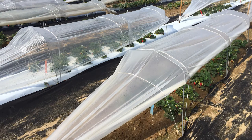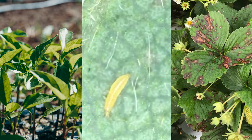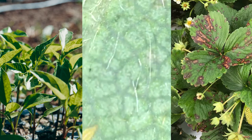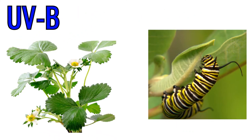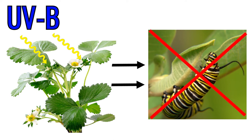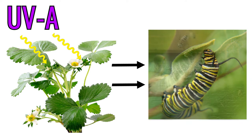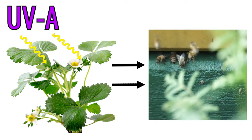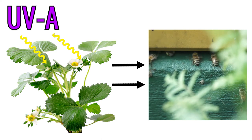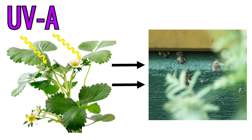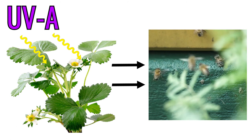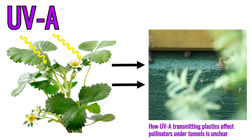Plastics used for protected culture systems come with varying photo-selective properties that differentially impact plant, animal, and microbe communities. In general, plants appear to be better defended against herbivores when UVB is present, but can also be susceptible to herbivory when UVA is present. In addition, beneficial insects may also rely on UVA to navigate their environment, but whether UVA transmitting plastics are beneficial to pollinators in the tunnel environment is so far unclear.